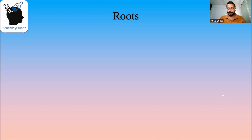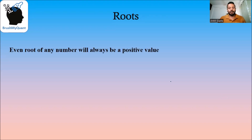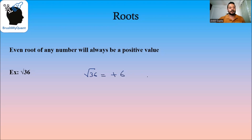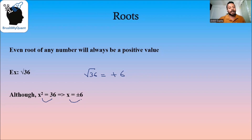The even root of any number will always be a positive value. For example, the square root of 36 will always be a positive number. You might be thinking you learned something else — when x² = 36 is given, then x = ±6. That's because when you take the square root on both sides, you get x = ±√36, which gives x = ±6.